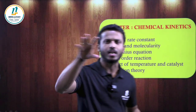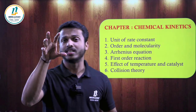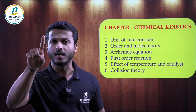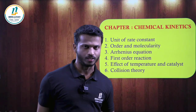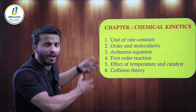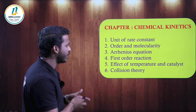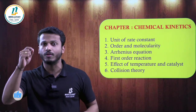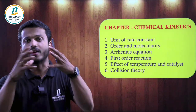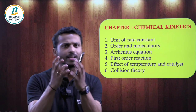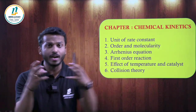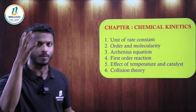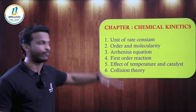In collision theory, study the equation: rate = P × Z_AB × e^(−Ea/RT), where P is the probability factor and Z is the collision frequency. For effective collision, two conditions must be satisfied: the colliding molecules should have a minimum threshold energy, and the molecules should be properly oriented. Please practice all numericals from this chapter — very sure.